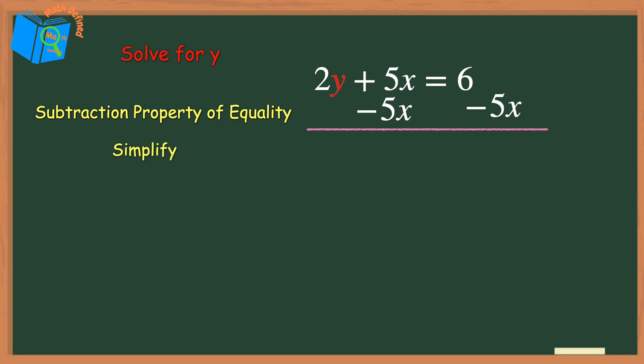Now we can simplify. On the left side, the 5x's cancel each other out, leaving the 2y. On the right side, we just bring down the 6 minus 5x.